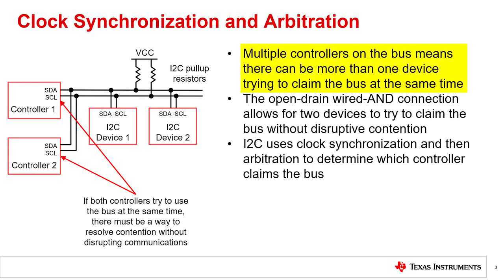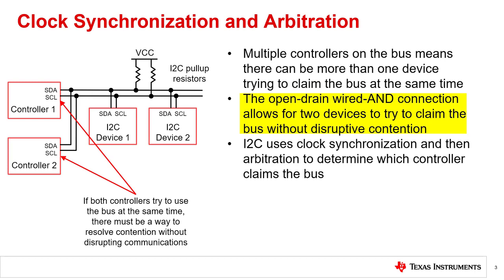In I2C, there may be multiple controllers on the same bus. Because of this, there may be two or more devices trying to claim the bus for communication at the same time. This requires multiple active controllers to resolve which device controls the bus. I2C uses a method of clock synchronization and arbitration to ensure that one controller gains control and does so without compromising its communication. Because I2C uses open drain connections to SDA and SCL, the connections result in a wired AND connection where the line gives a logical AND of the device outputs.